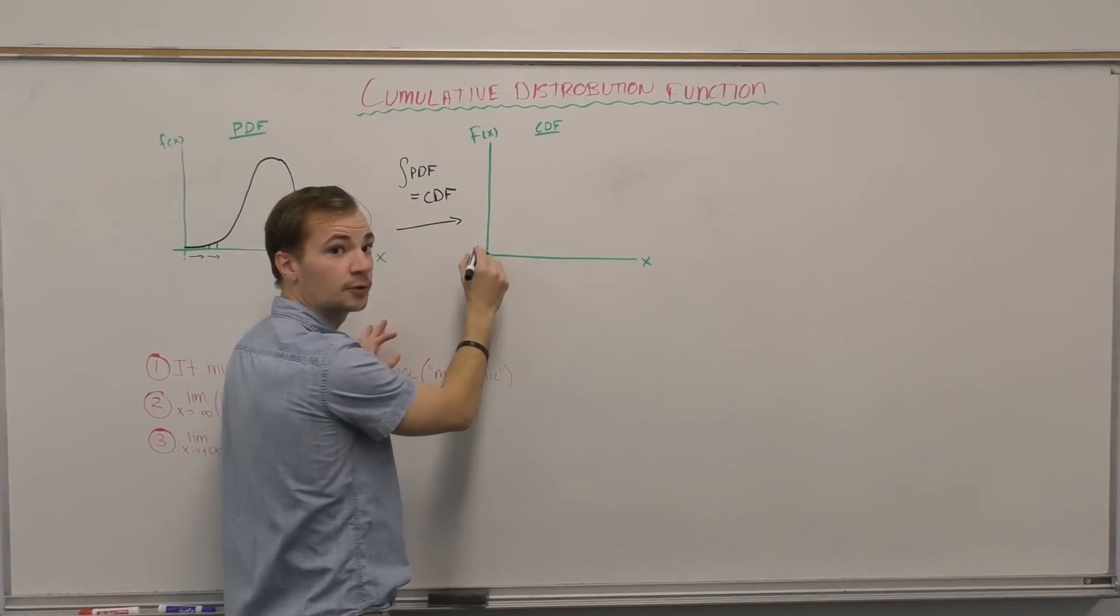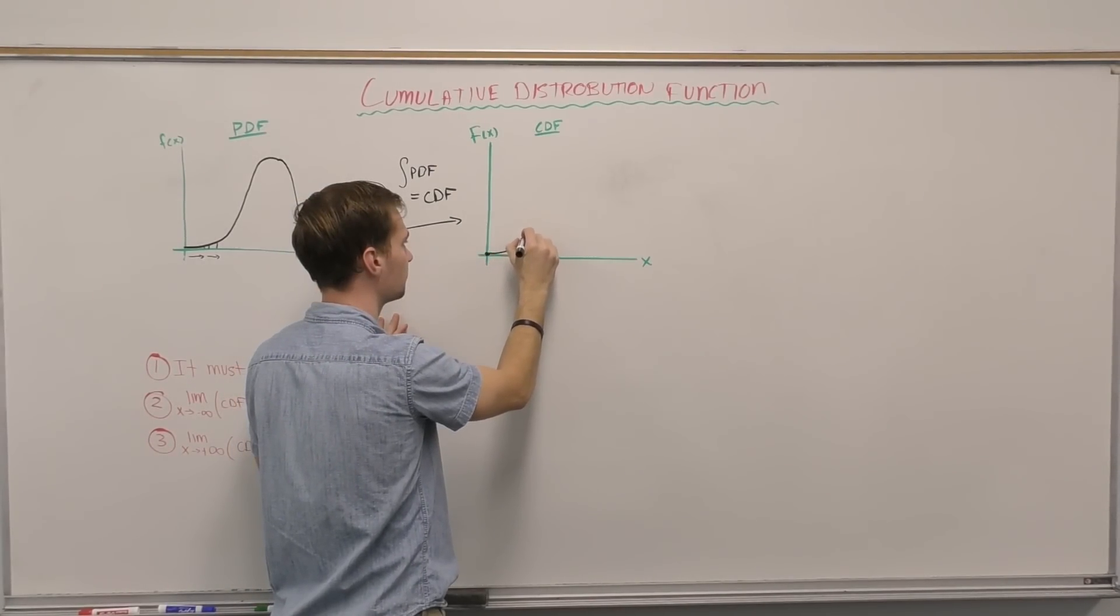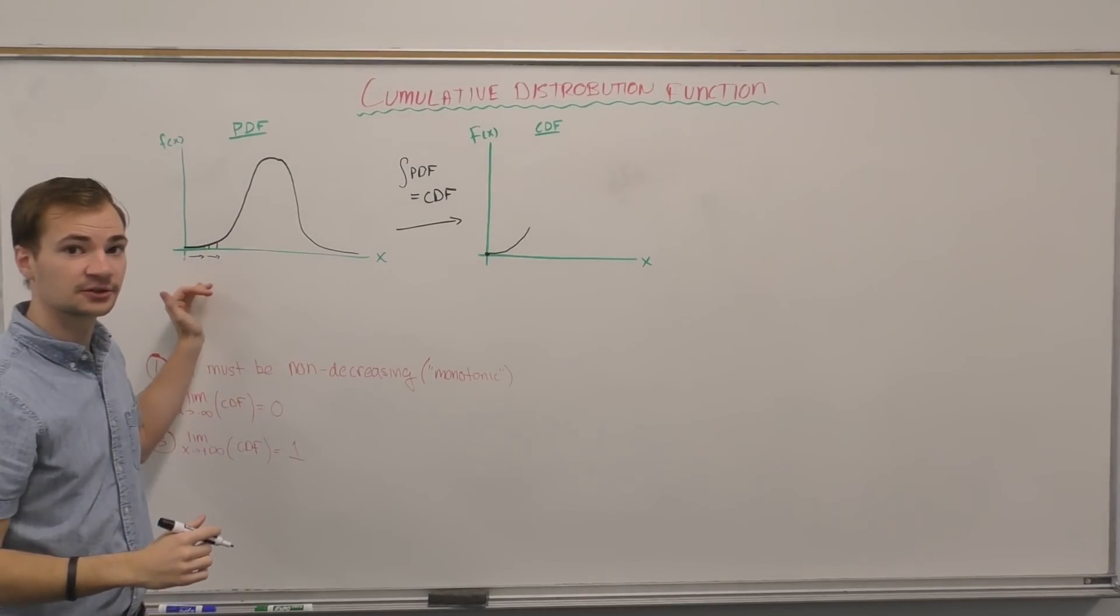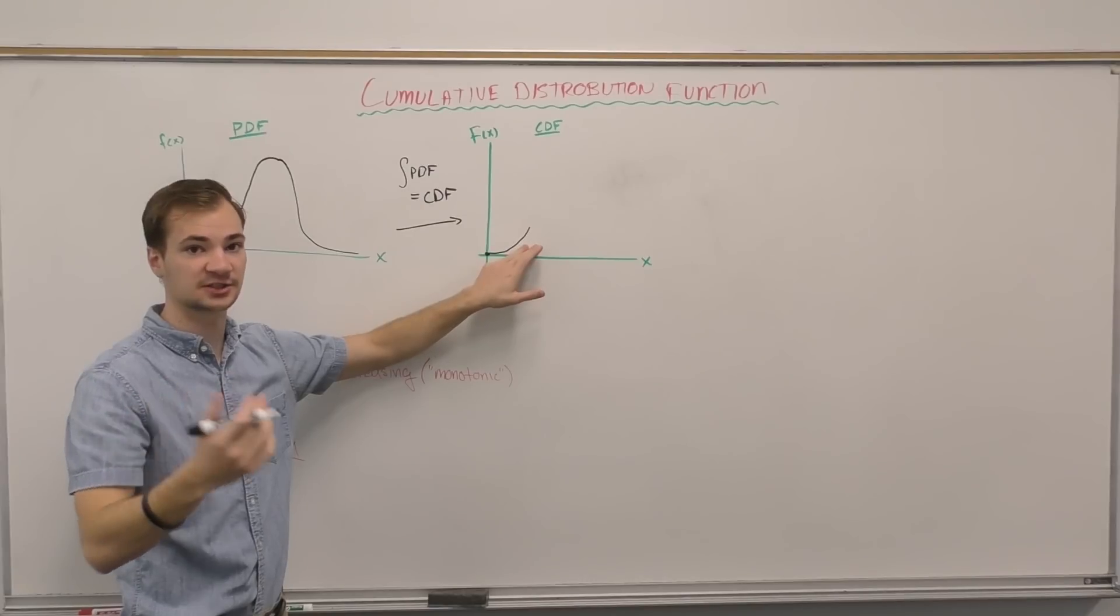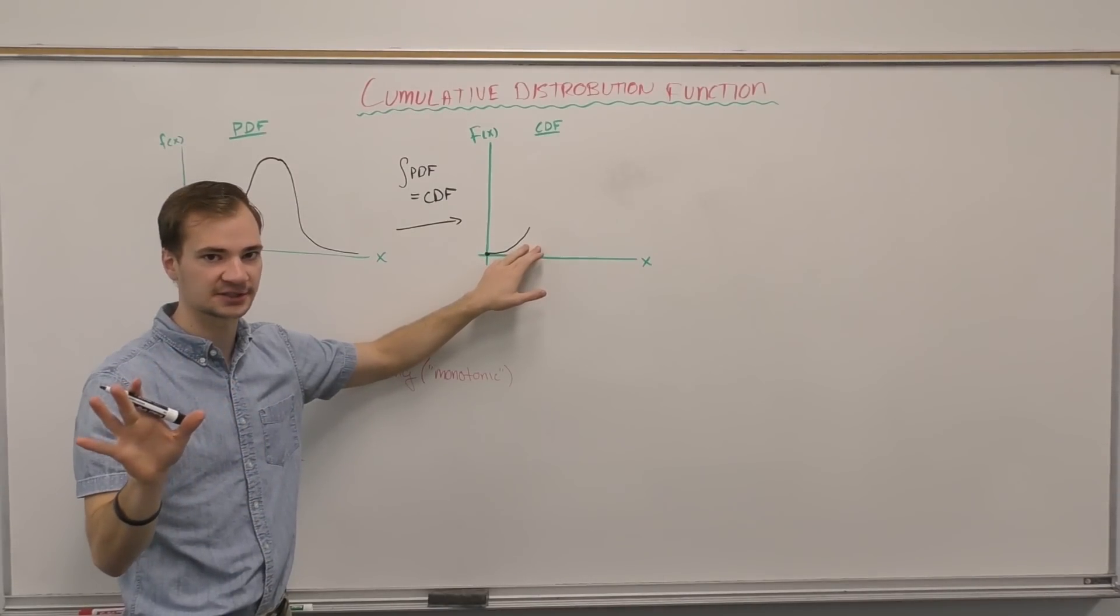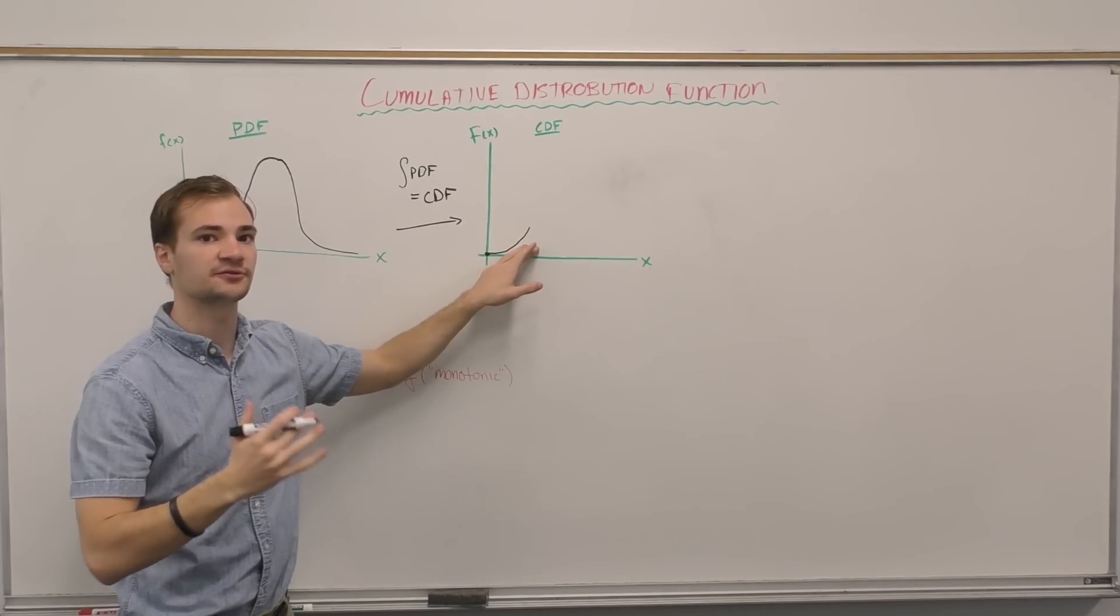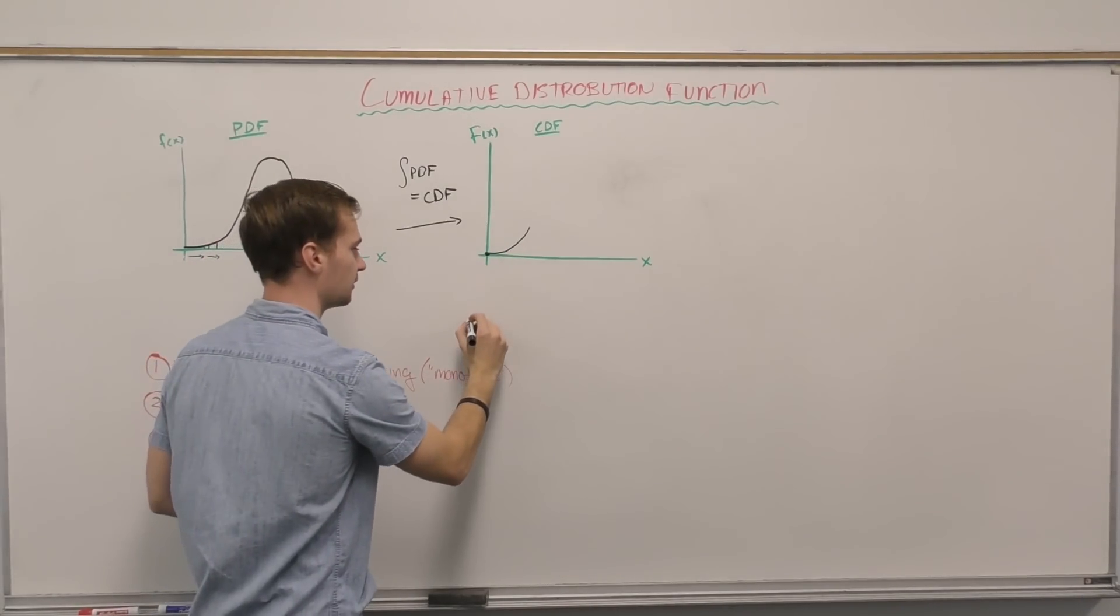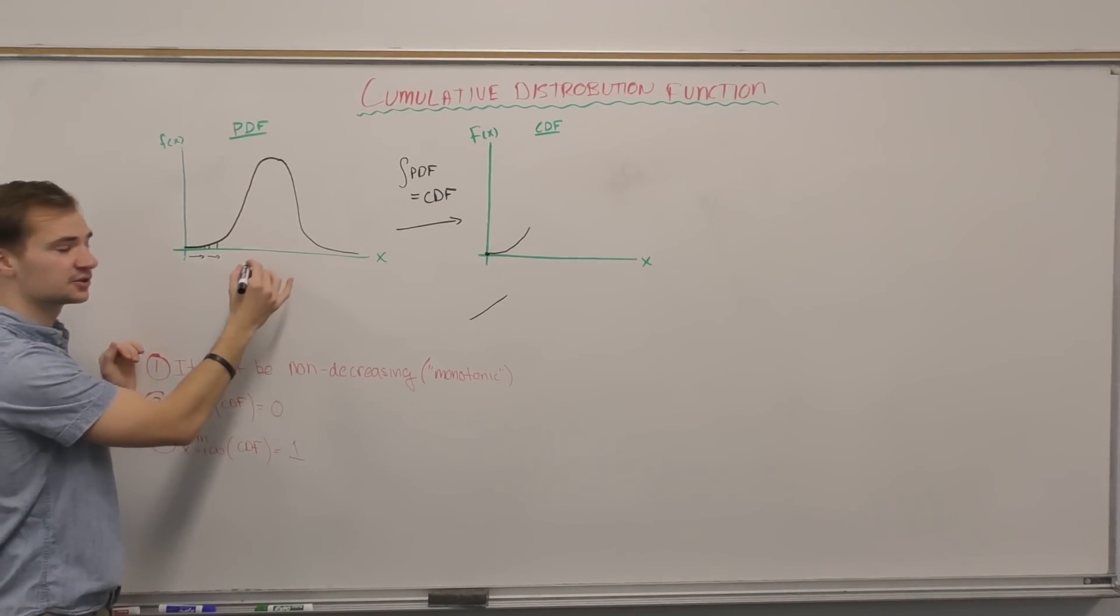So we might start off very small, but as we increase going right, our area is increasing almost exponentially, if you will—nothing to do with the actual exponential distribution, but it's gaining area faster and faster and faster. It's not linear. We're not doing a straight line. It's increasing as we go and we increase.